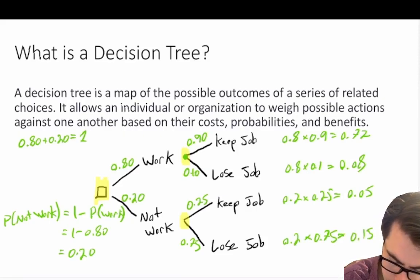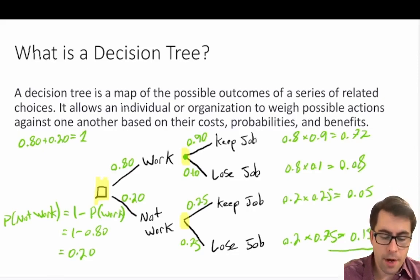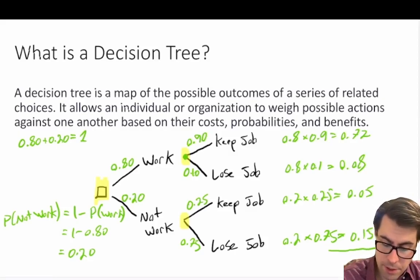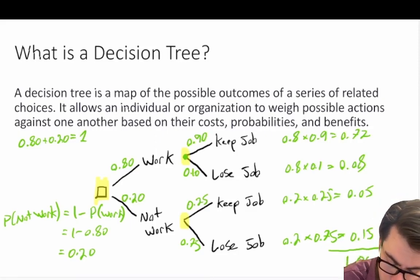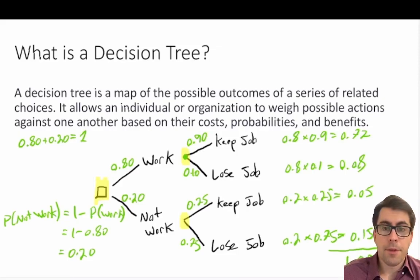Now interestingly, if we take the sum of the products of all the probabilities multiplied across their branches, what we get is a sum of 1. So 0.72 plus 0.08 is 0.80, plus 0.05 is 0.85, plus 0.15 gives us a sum of 1. So the sum of the probabilities multiplied across the branches must add up to 1.